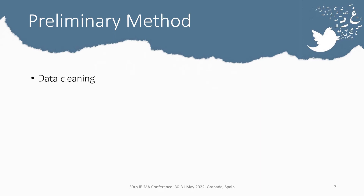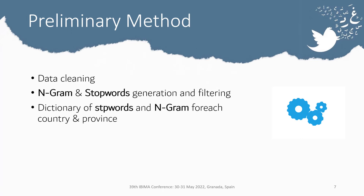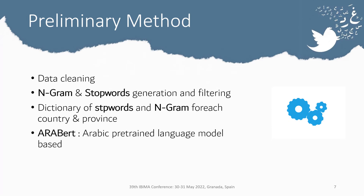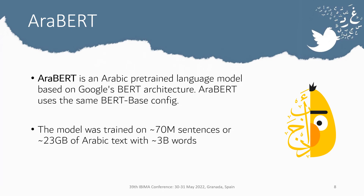For our methodology, we started by cleaning the labeled tweets, then generated n-grams and applied stop-word filtering. We also built dictionaries of stop-words and n-grams for each country and province. We then applied AraBERT — an Arabic pre-trained language model based on Google's BERT architecture using the same BERT base configuration. The model was trained on 70 million sentences, or 23 gigabytes of Arabic text with 3 billion words.